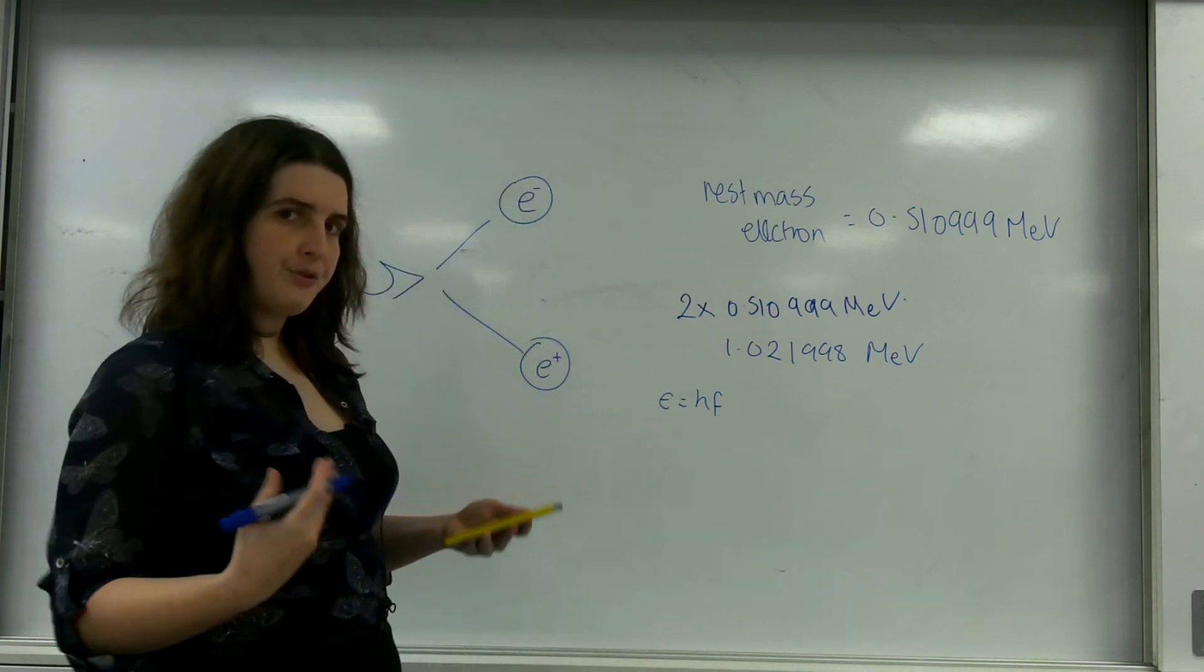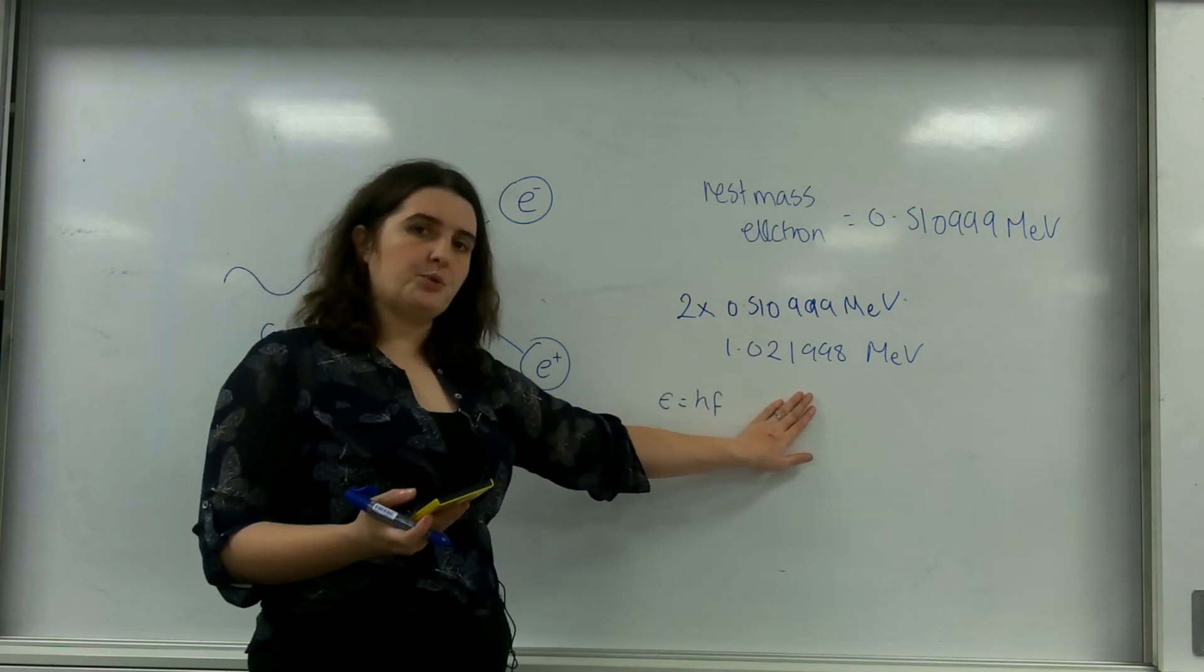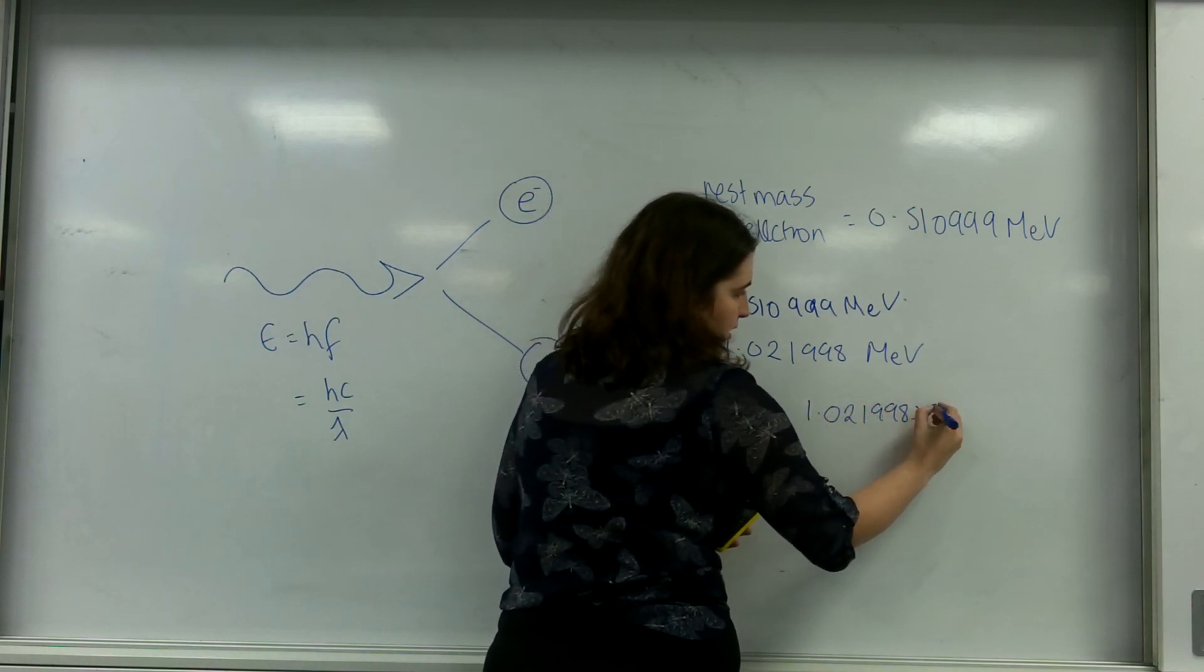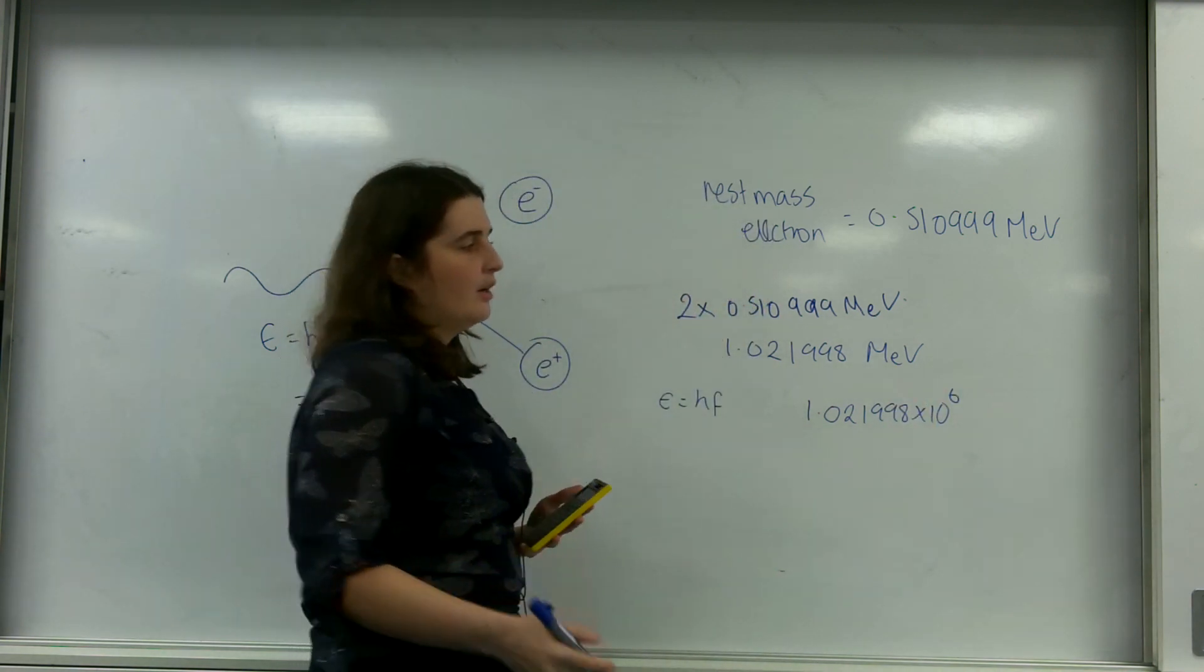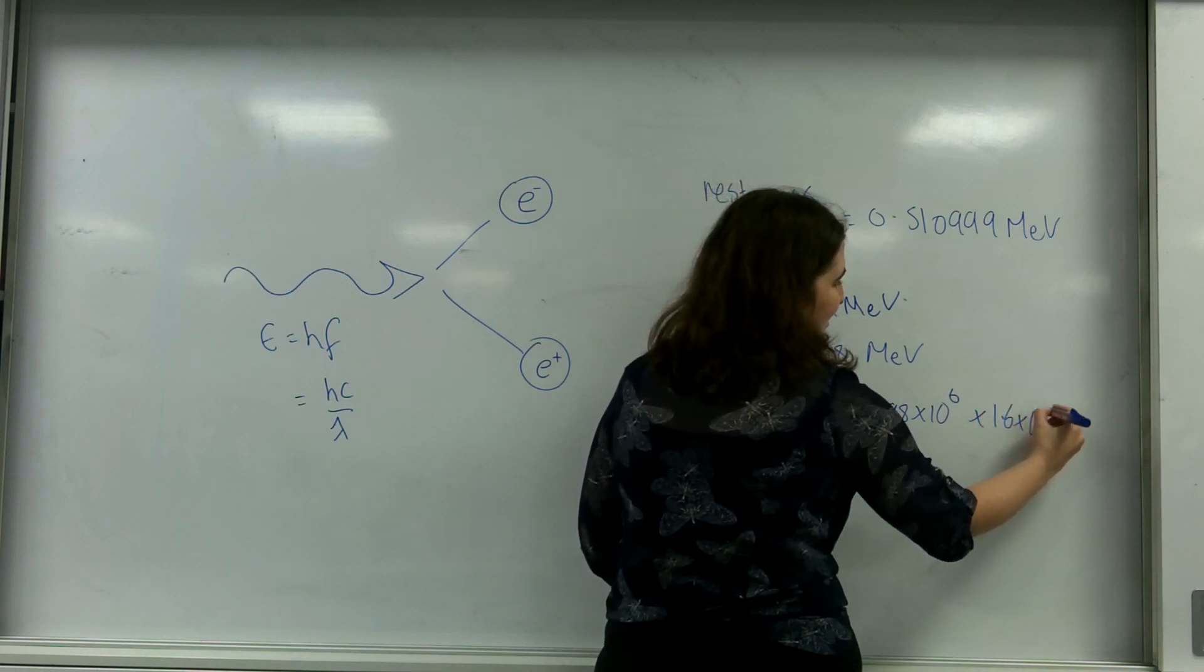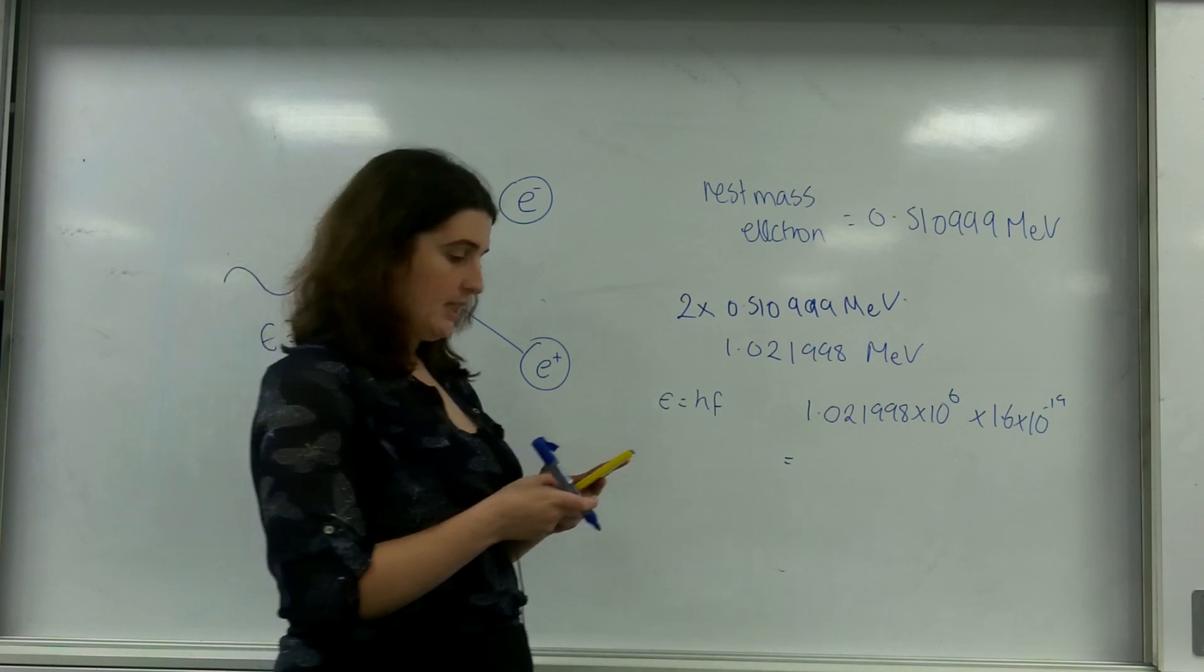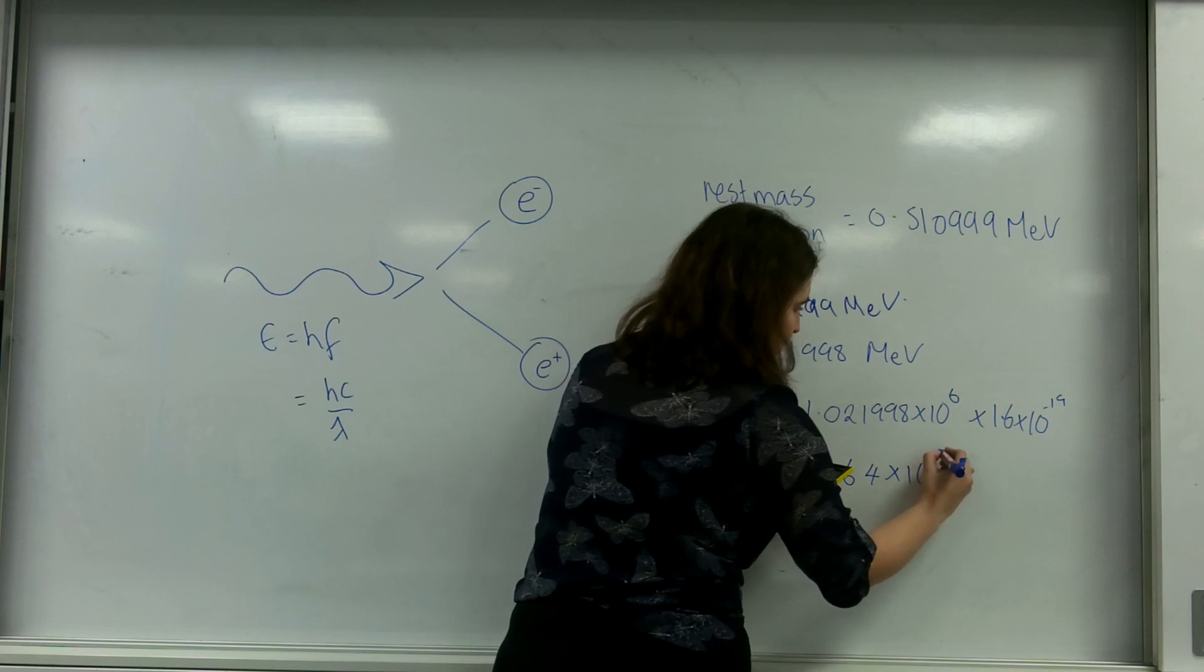So let's try and find out the frequency of my photon here. First of all I must convert this into joules. And remember to do that you must first of all get it into electron volts and then times it by the charge 1.6 times 10 to the minus 19 of an electron. So that's 1.6 times 10 to the minus 19 and that is 1.64 times 10 to the minus 13 joules.